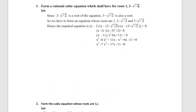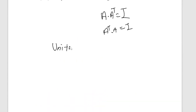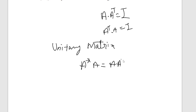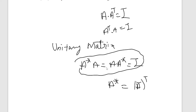Unitary matrix: A-star times A equals I, where A-star is the conjugate transpose (conjugate and transpose) of A. So A-star equal to A-inverse is the condition for a unitary matrix.